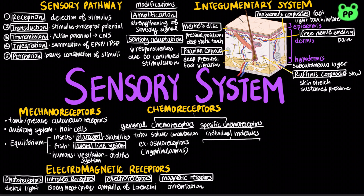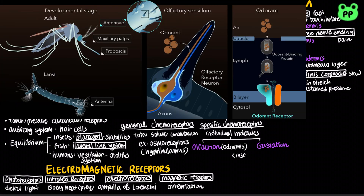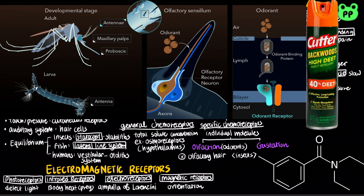Specific chemoreceptors respond to individual kinds of molecules. The perceptions of olfaction, or smell, and gustation, or taste, both depend on specific chemoreceptors. Olfaction is dependent on the detection of odorant molecules. Insects detect odorants using olfactory hairs, which are usually located on their antennae. The chemical DEET found in insect repellent actually protects against bites by blocking the olfactory receptor in mosquitoes that detects human scent.